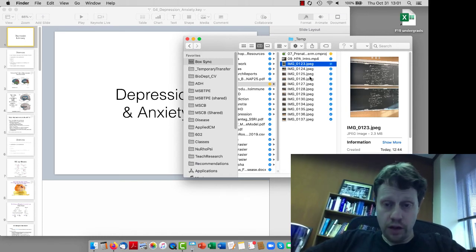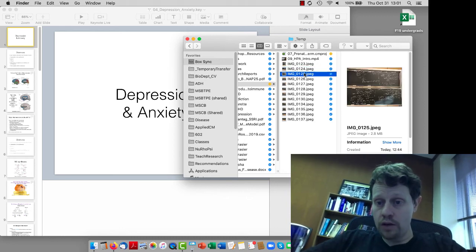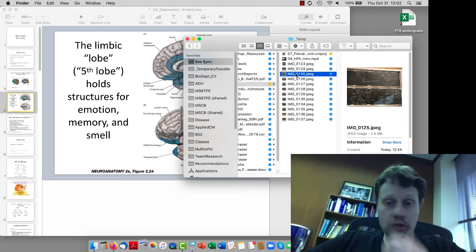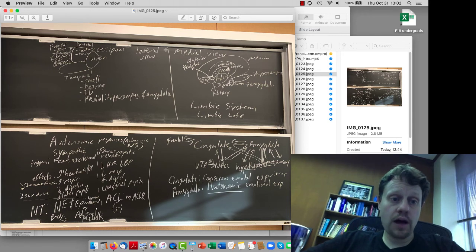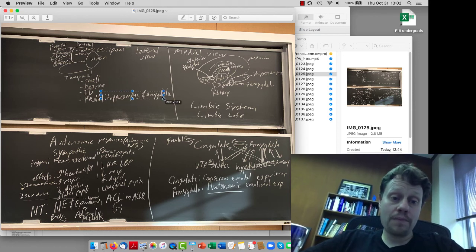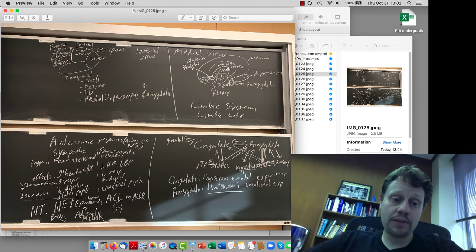Before we even talk about major depressive disorder, I wanted to introduce the limbic system and remind you about the other lobes of the cortex. We've already talked about the frontal, parietal, occipital, and temporal lobes. We're going to be talking more about the medial parts of the temporal lobe where the hippocampus and amygdala are because that's part of the limbic system.